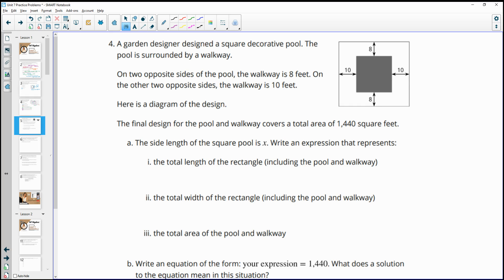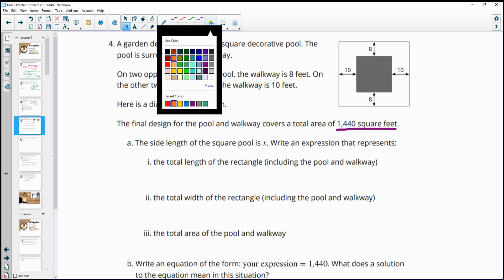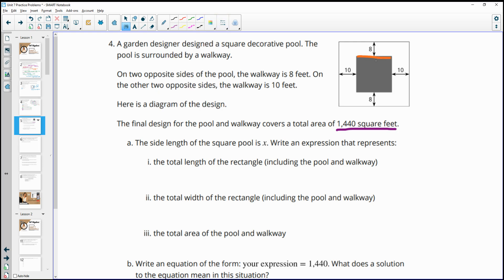Number four, a garden designer designed a square decorative pool. The pool is surrounded by a walkway. On two opposite sides of the pool, the walkway is 8 feet, and on the other two sides, it's 10 feet. And they gave us a diagram. The final design for the pool and walkway covers an area of 1,440 square feet. The side length of the pool is X. So if we call this the side length of the pool, here's our pool. This is an X by X because it's a square.